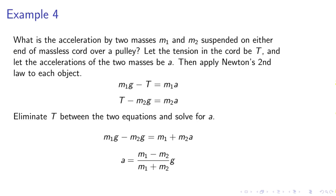Example 4. What is the acceleration of two masses, m1 and m2, suspended on either end of a massless chord over a pulley? Let the tension in the chord be T. Let the accelerations of the two masses be A. Then apply Newton's second law to each object. Then we eliminate T between the two objects and solve for A. So in the first equation, m1 g minus T equals m1 a.